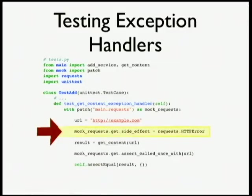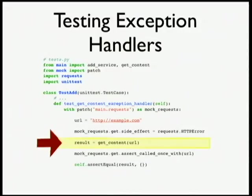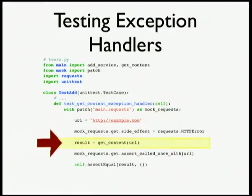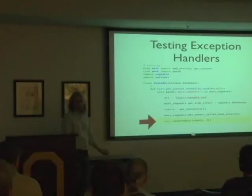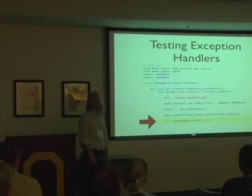Suddenly I can control how requests breaks my code, and now I can test my exception handlers. I've imported my get_content function that I'm testing, I call it passing the URL, and within that function, when I call request.get, it will raise an exception — my exception handler gets tested. I can assert that request.get was called, and then I can assert that the result gives me an empty dictionary, because that's what I decided to do in the case of a connection error or an HTTP error.